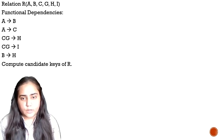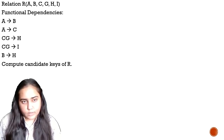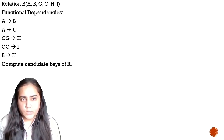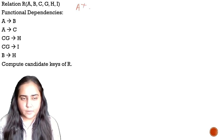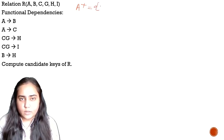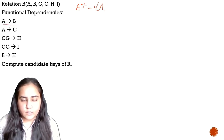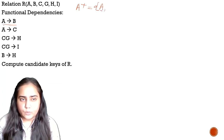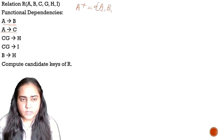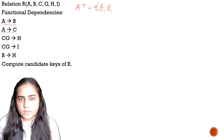You will basically calculate the closures of all the attributes given here. To do that, you need to first start with single attributes, which means I will start with A and compute the closure of A. To calculate the closure of A, you will create a set and first add A itself. After adding A, you will check what else can be added. The first functional dependency is A determines B, and A is present in our set, so we can add B.